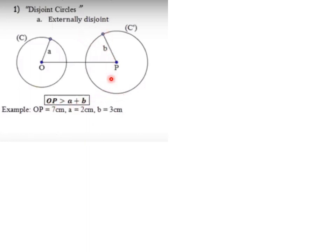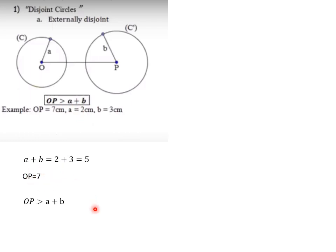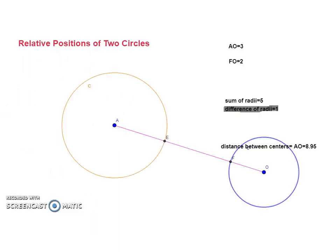Let us see this example: A plus B equals 2 plus 3, which is 5, and OP is 7. We notice that OP is greater than A plus B — yes, 7 is greater than 5 — therefore these two circles are externally disjoint.